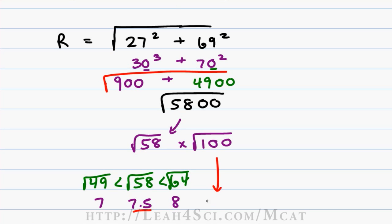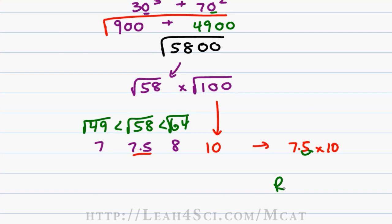The square root of 100 is 10, that's simple enough and our final calculation is 7.5 times 10. Whenever you multiply by 10, we move the decimal to the right which gives us a resultant of 75 meters.